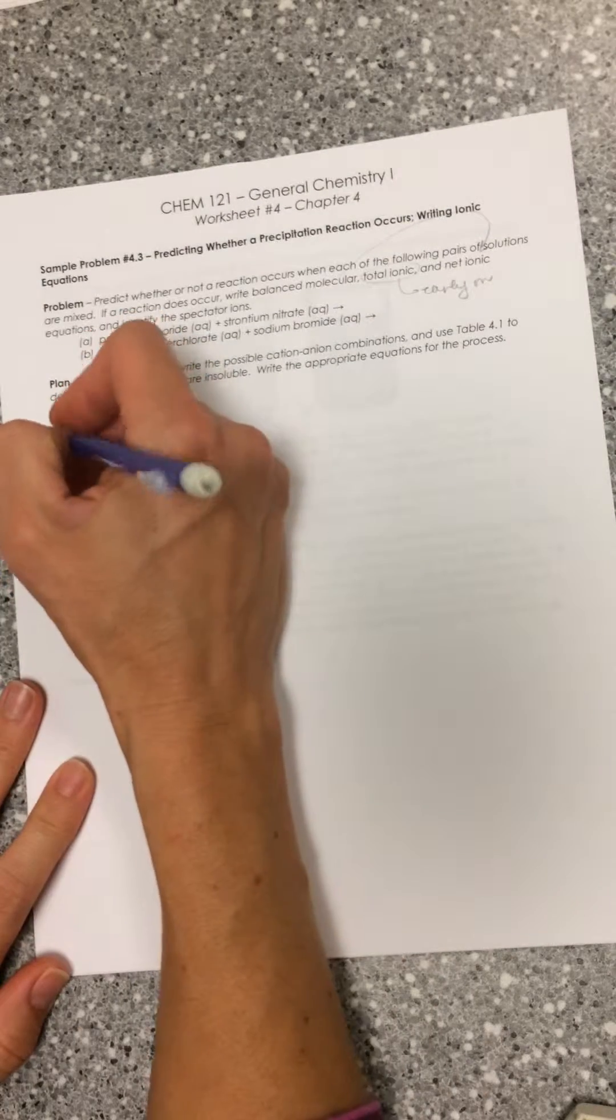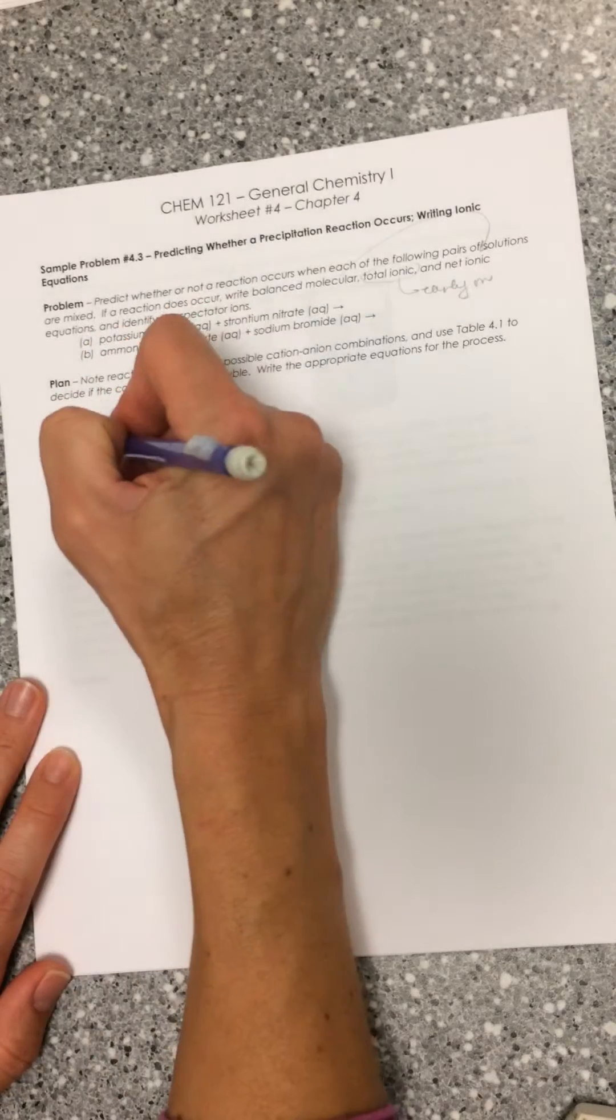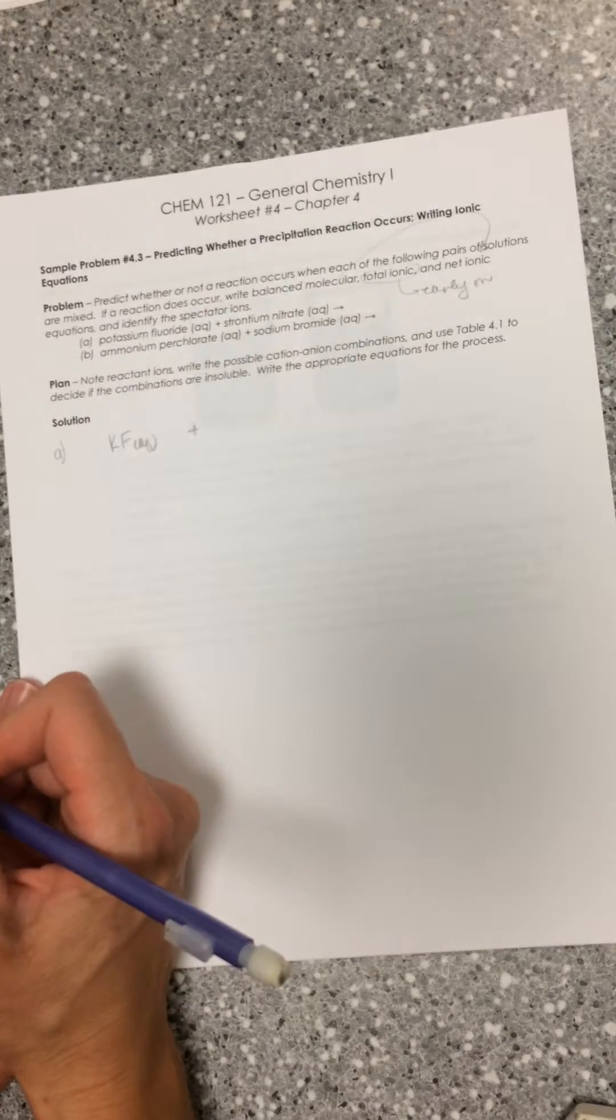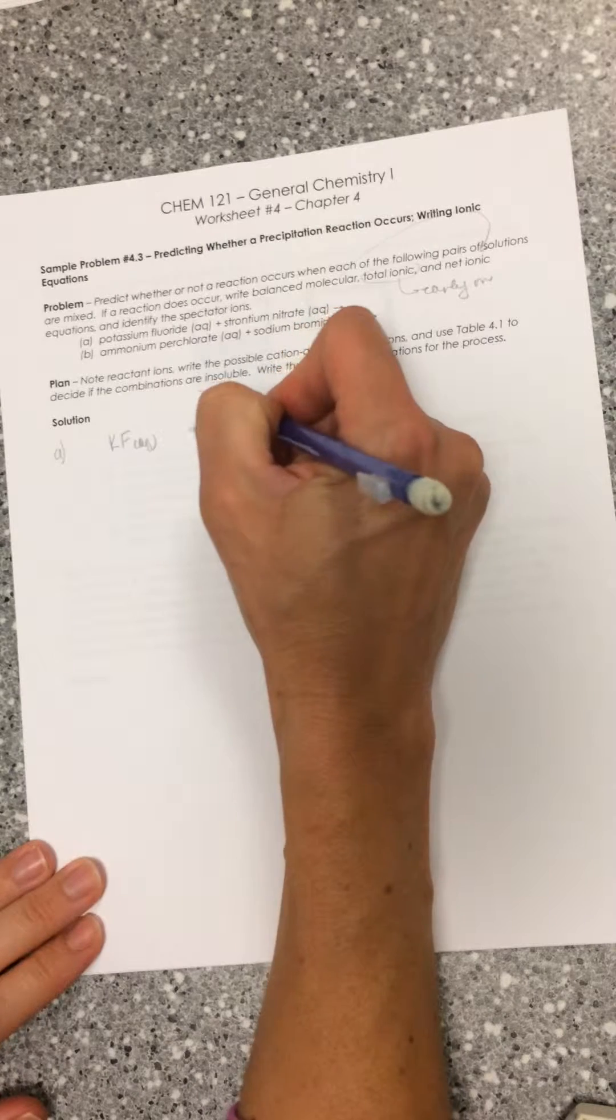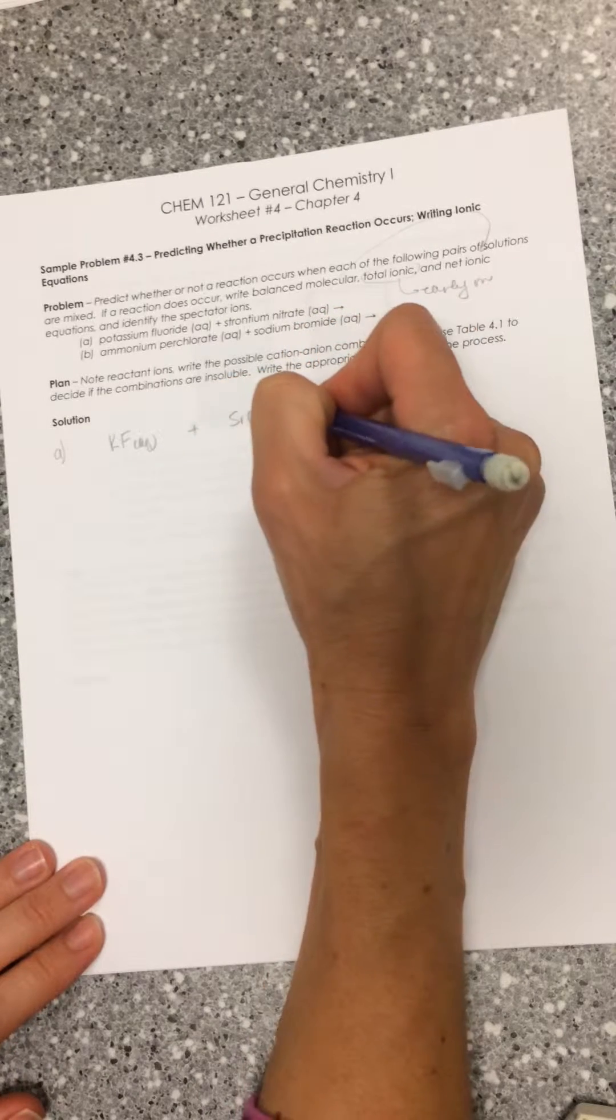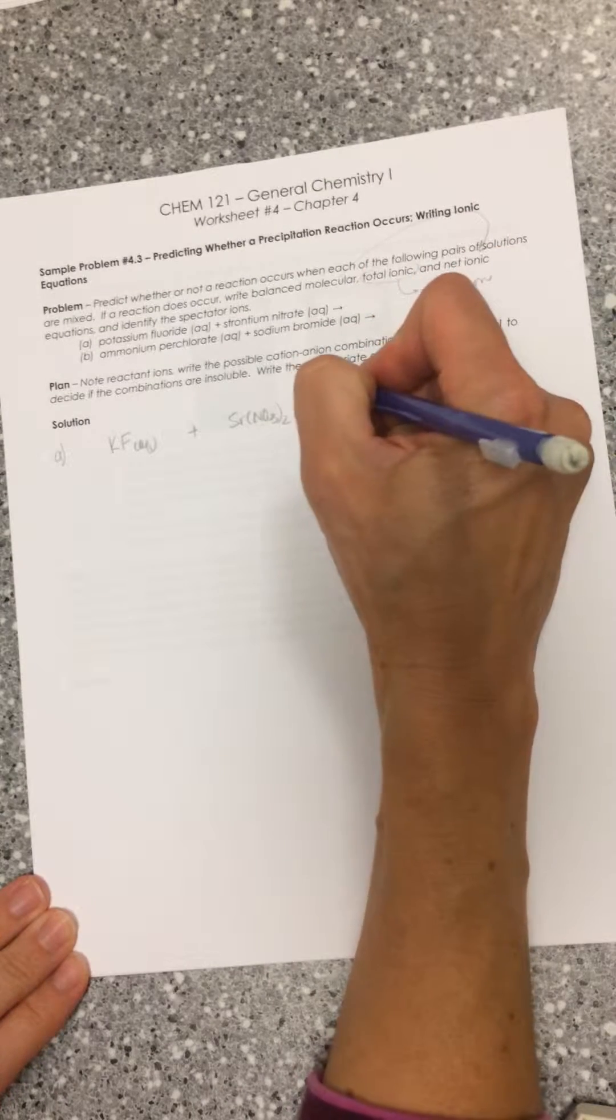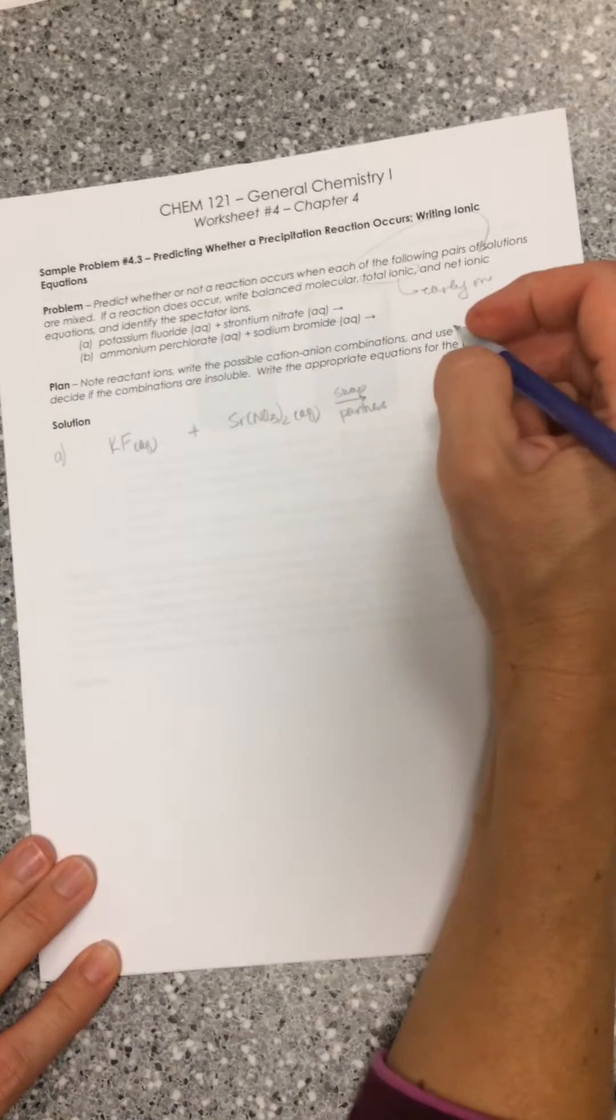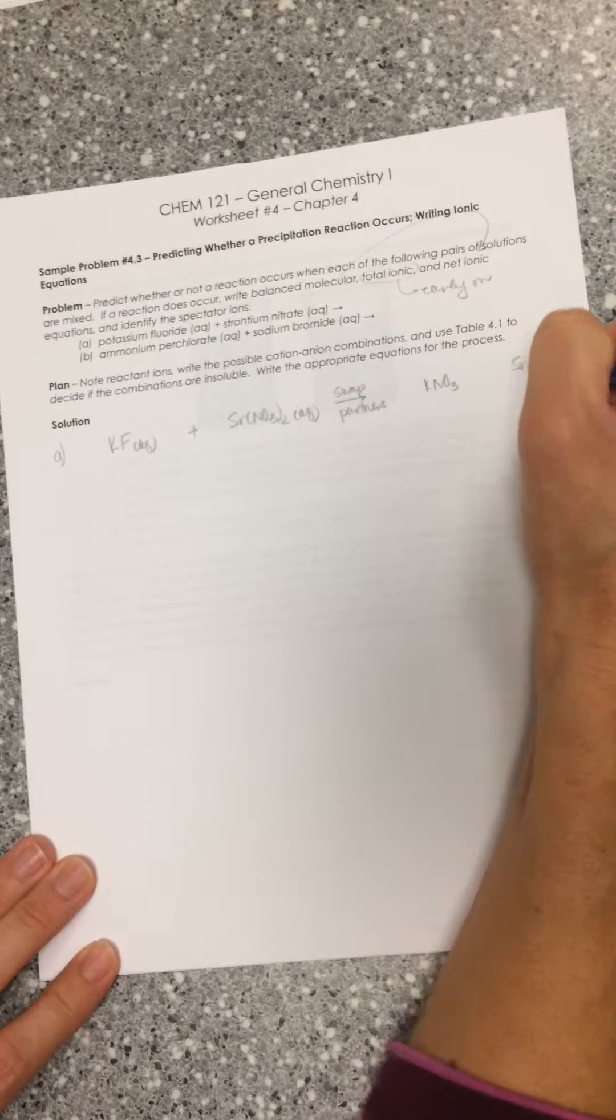Starting with our first problem - you can see how important Chapter 2 is, knowing how to take a name and make a chemical formula. We've got potassium fluoride, so KF aqueous, plus strontium nitrate. Strontium is Sr2+, nitrate is NO3-, so we have Sr(NO3)2 aqueous. What we do with precipitation reactions is we swap partners to figure out what we make on the right side of the equation.